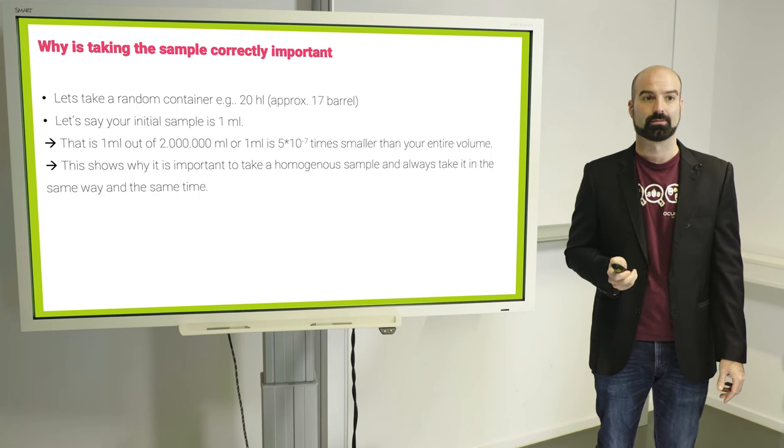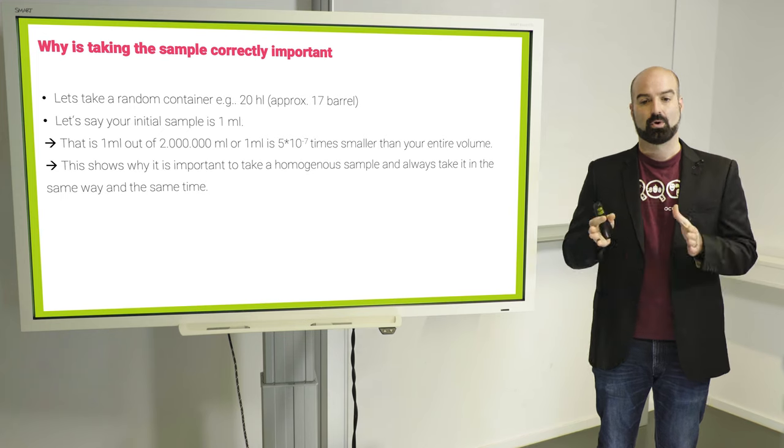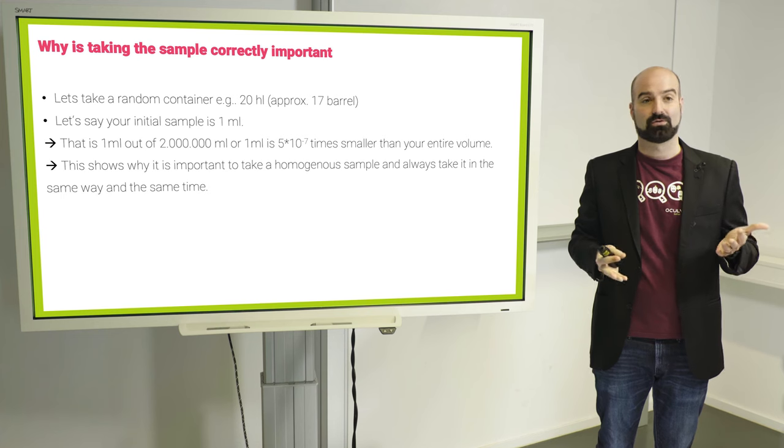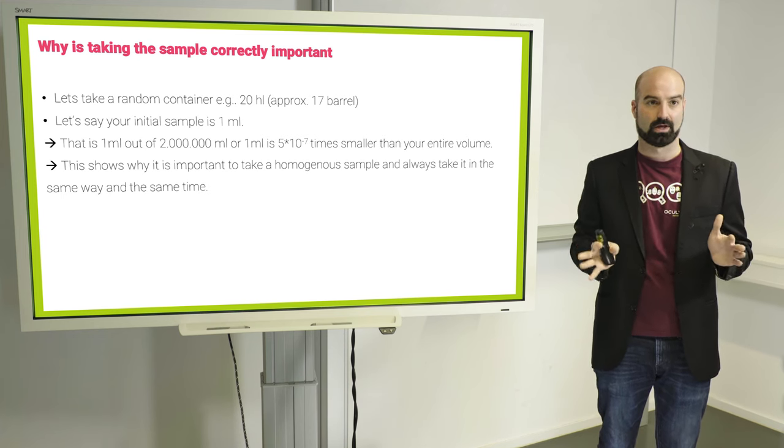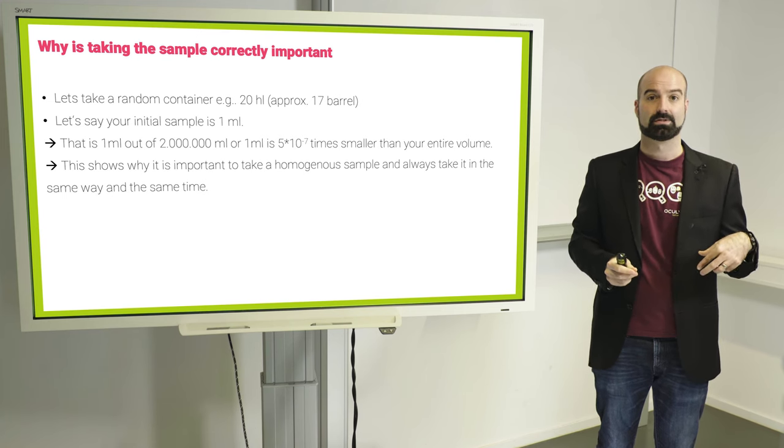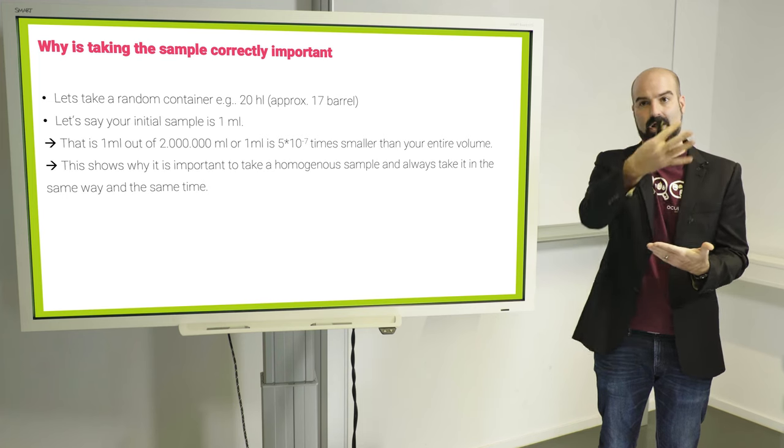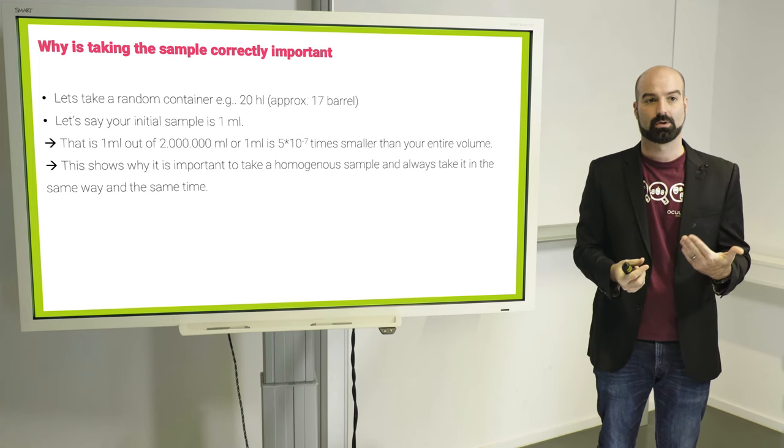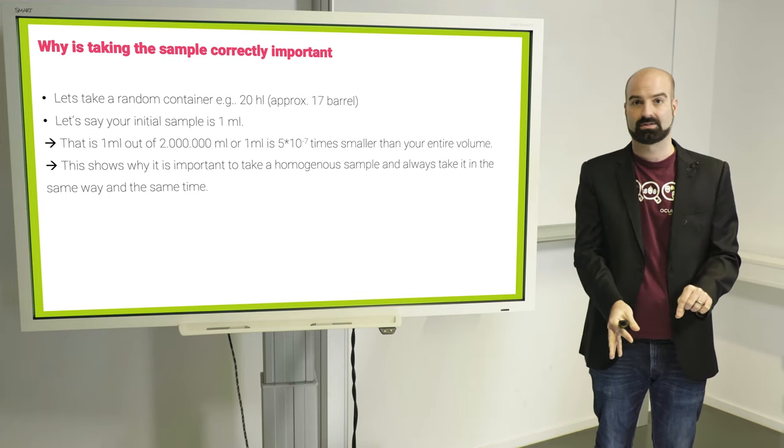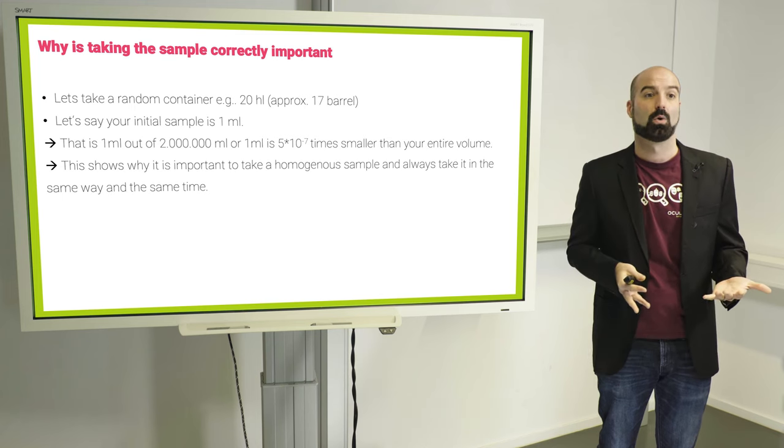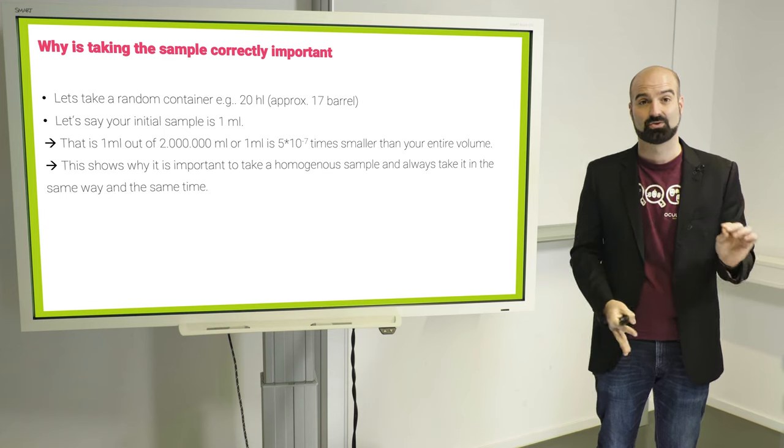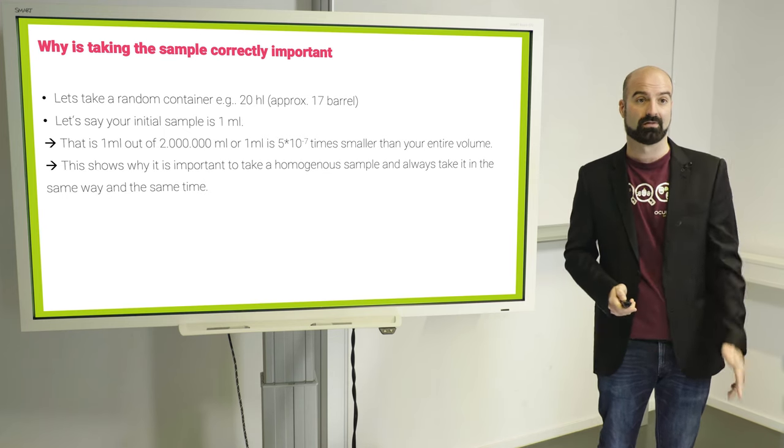First off, not taking a representative sample of your yeast. It is very important that the sample you take is actually representing the rest. Let's say you have 20 hectoliters or like 17 barrels if you don't like SI units. And your sample that you're taking is one milliliter. This is like half of a millionth of your actual volume. So if this volume was taken at the very top and the rest of the yeast is settled or at the very bottom, when it's settled, it will not represent your tank as a whole. So it's important to either mix it or at least have homogeneous or at the very least, do it the same way every time so you can compare values.